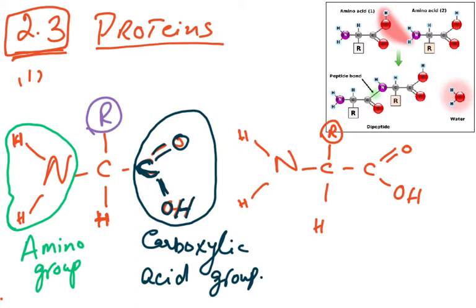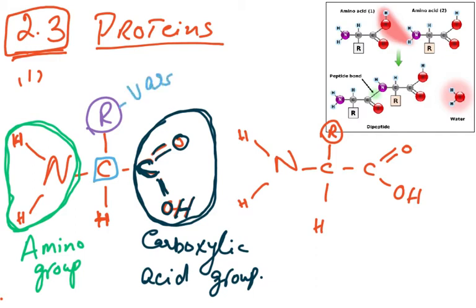An amino acid is made up of an amino group (NH2) and a carboxylic acid group (COOH). Attached to the central carbon is a residual group, also called the variable group — variable group means this part changes.